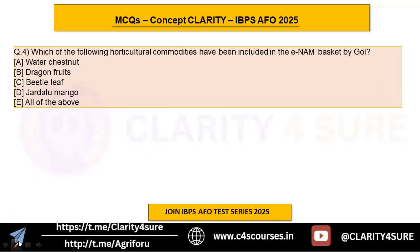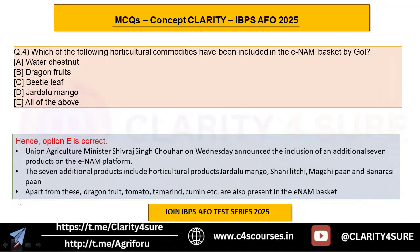Options are water chestnut, dragon fruit, betel leaf, jama alu, mango, or all of the above. The answer is all of the above. Union Agriculture Minister Shivraj Singh Chouhan announced the inclusion of seven additional products on the eNAM platform. Horticultural products among them include jama alu, mango, Shahi lychee, Magahi paan, and Banarsi paan. Dragon fruit, tomato, tamarind, and cumin are also included in the eNAM basket from time to time.